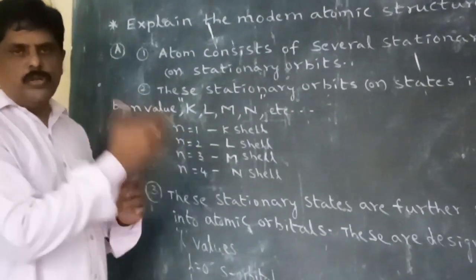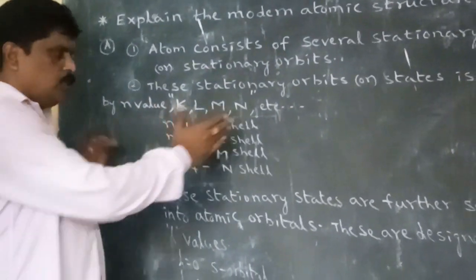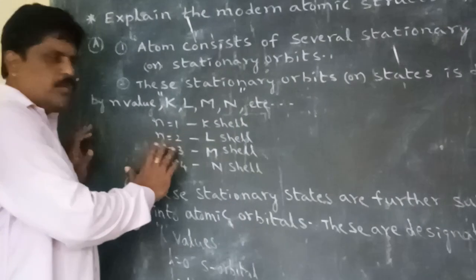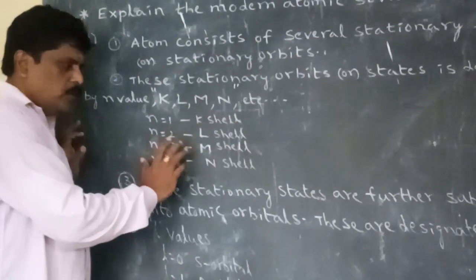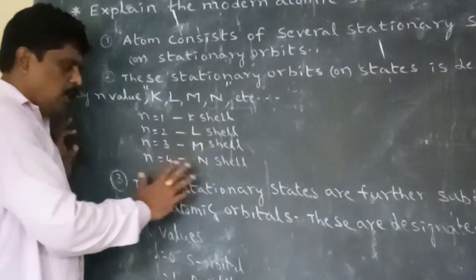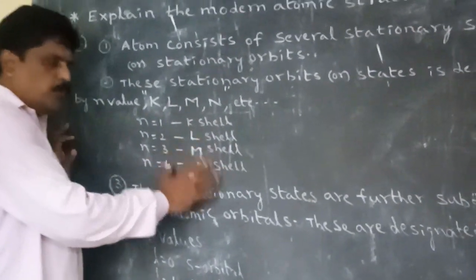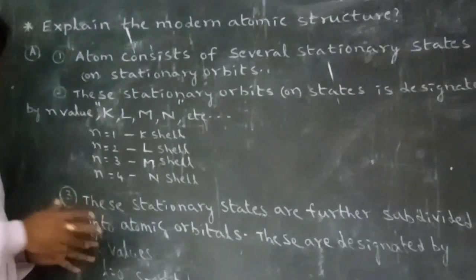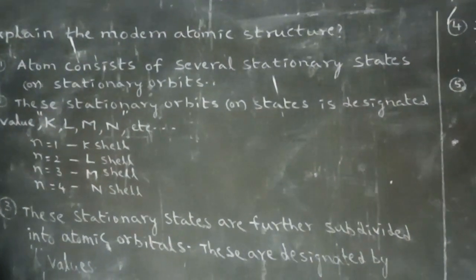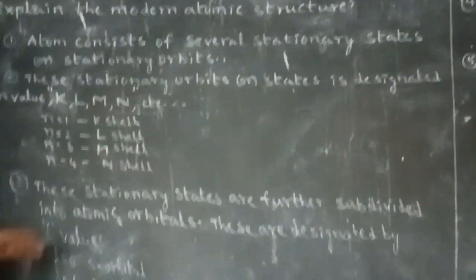N is equal to 1 — it is K-Shell. N is equal to 2 — L-Shell. N is equal to 3 — M-Shell. N is equal to 4 — N-Shell. These are also observed in the Bohr Atomic Model.